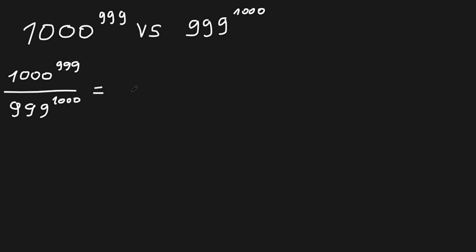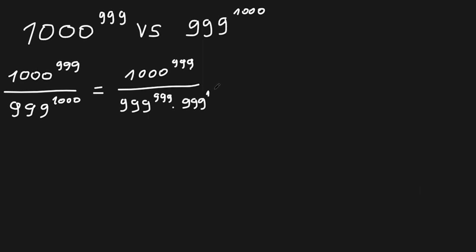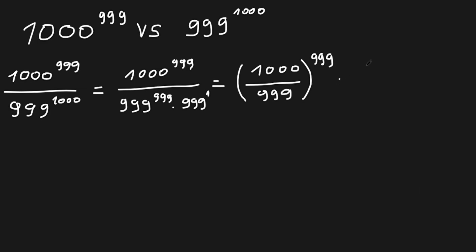So now we have 1000 to the power of 999, and then 999 to the power of 1000 can be written as 999 to the power of 999 times 999 to the power of 1. Since 1000 to the power of 999 has the same exponent as 999 to the power of 999, we can write it as the base 1000 divided by 999, all to the power of 999, and then times 1 divided by 999.